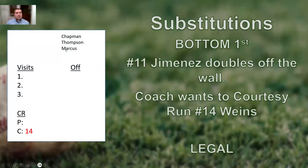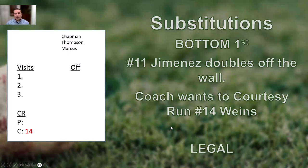Back to it. Marcus is our catcher. Same thing: visits one, two, three, courtesy runner, pitcher, catcher — leave the offensive stuff blank. In this scenario, Wings is 14 and he's running for the catcher, so you put him under the C position.